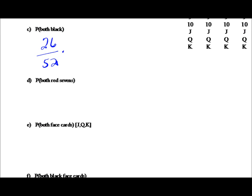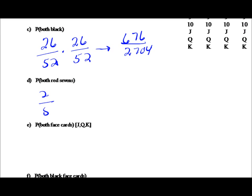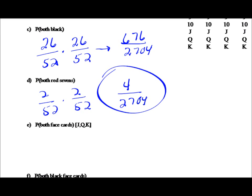The probability that both cards are black: twenty-six out of fifty-two for the first, and twenty-six out of fifty-two for the second. Using the counting principle that's six hundred seventy-six out of twenty-seven hundred four — about twenty-five percent, or one-fourth. For both red sevens — seven of hearts or seven of diamonds — two out of fifty-two times two out of fifty-two gives four out of twenty-seven hundred four, less than one percent.